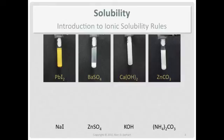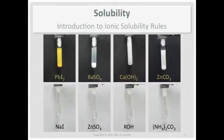What I did is I swapped out all the cations for different ones. Those are all soluble, but that's kind of random. Sodium and Potassium are in Group 1A, Zinc is a transition metal, and Ammonium is a polyatomic ion.